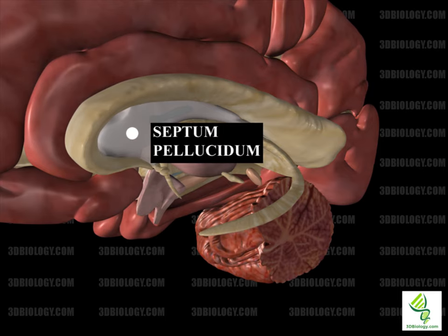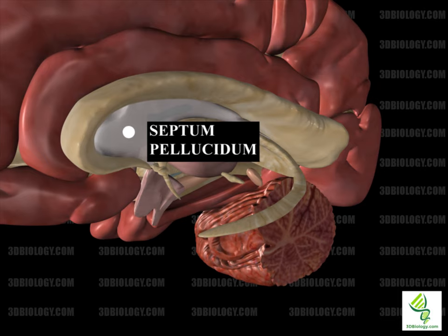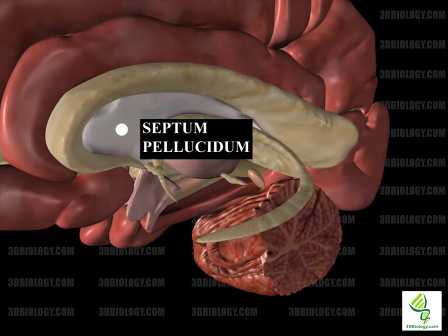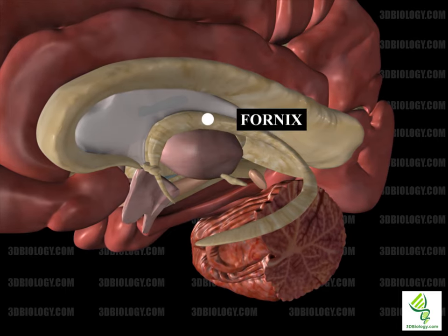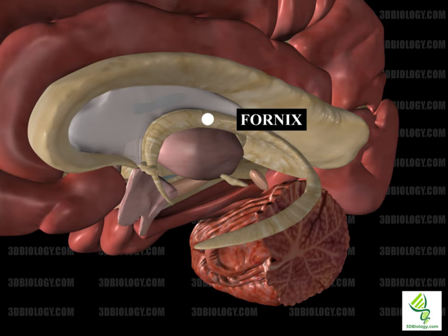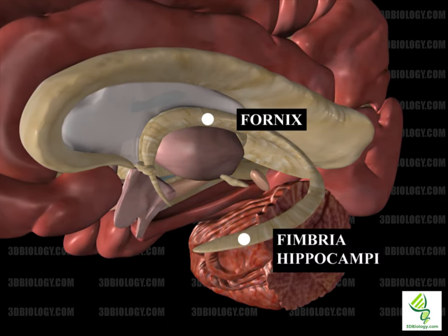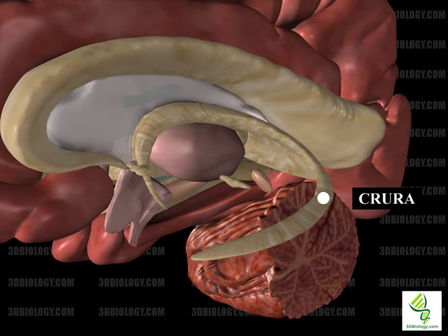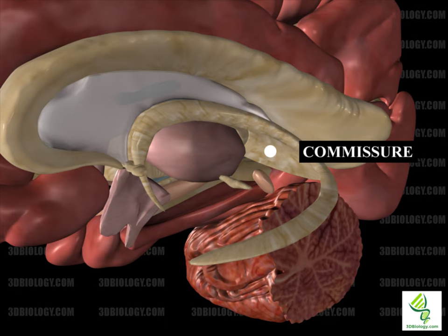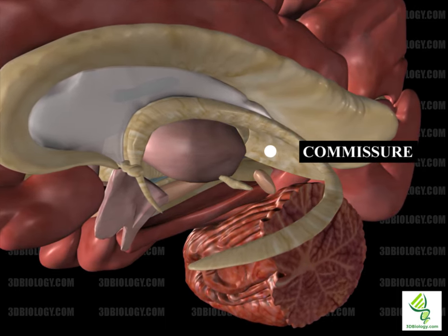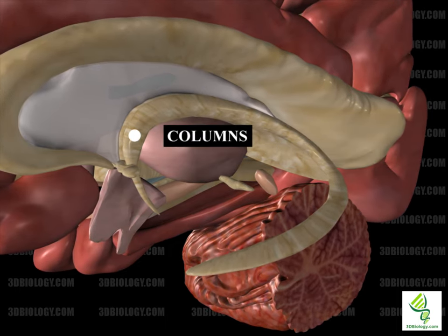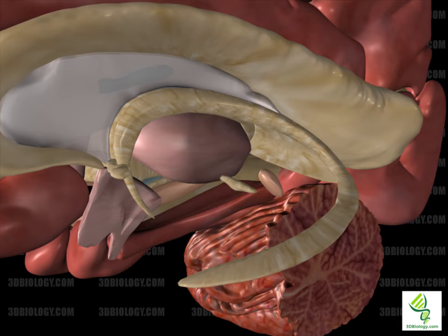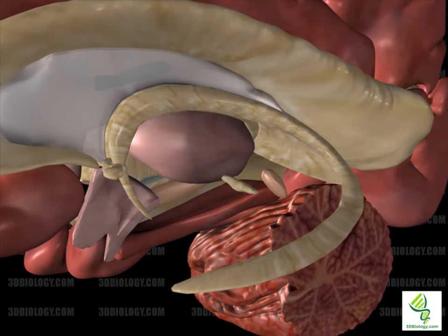The septum pellucidum is a membrane between the two cerebral hemispheres. It separates the lateral ventricles and encloses the fifth ventricle, stretching from the corpus callosum to the fornix. The fornix is a part of the limbic system and is an output of the hippocampus. It starts on each side of the hippocampus as fimbria hippocampi and continues as the crura, or posterior pillars. At the commissure of the fornix, the fibers meet forming the body. Around the anterior commissure, the body divides again into the anterior pillars or columns, which continue onto the mammillary bodies. The fornix is important in establishing episodic memories, and fornix damage leads to problems of spatial memory.